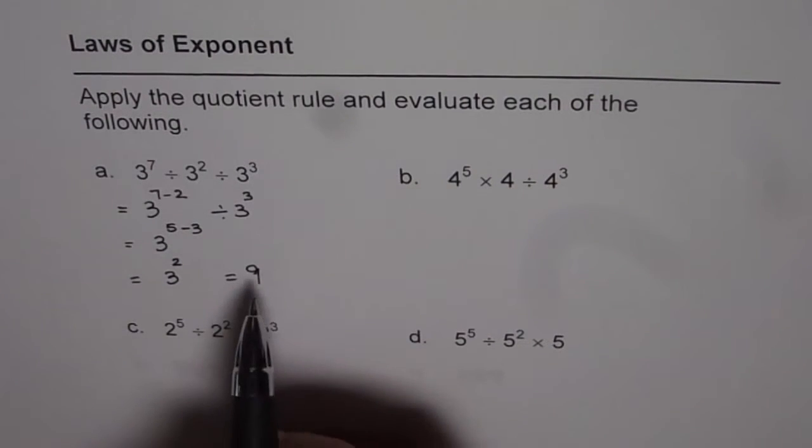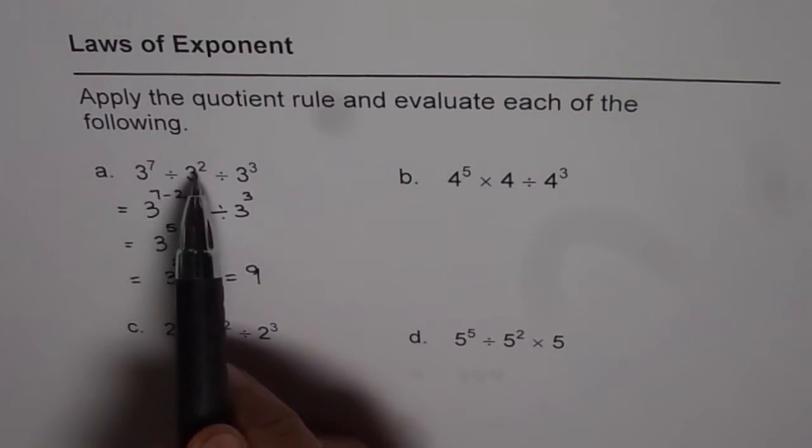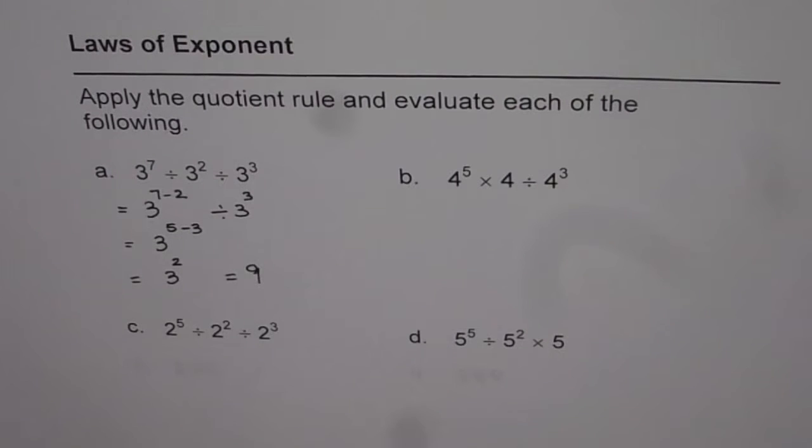Well, we could have got straight also writing 3 as the base and exponent as 7 minus 2 minus 3. Anyway, you get 9 which is the correct answer for the first one.